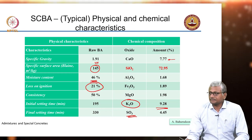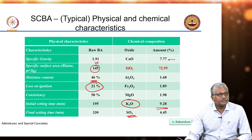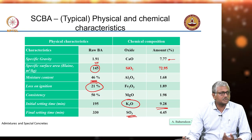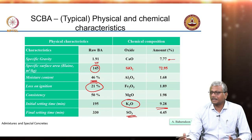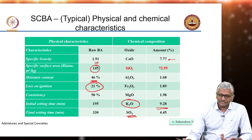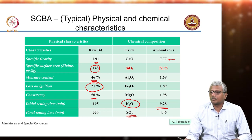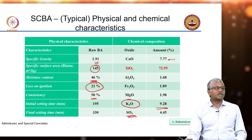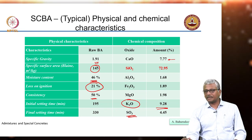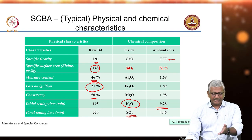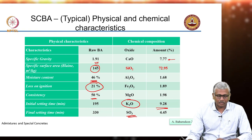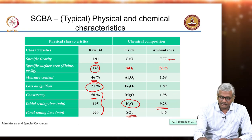Bagasse ash will have a lot of unburnt carbon — in one sample collected from interior Tamil Nadu, there was more than 20% loss on ignition, which is unacceptable for use in concrete as it creates problems with setting, hardening, and air entrainment. Because of its interesting structure, the water demand for an 80:20 cement-bagasse ash mixture is significantly higher — about 50% normal consistency versus 30% for plain cement. Initial and final setting times are also somewhat extended in these mixtures.